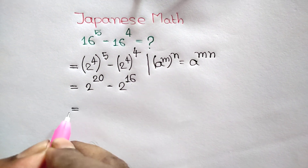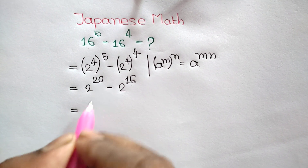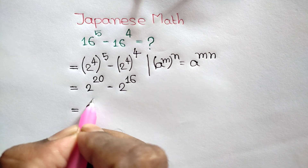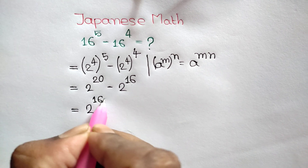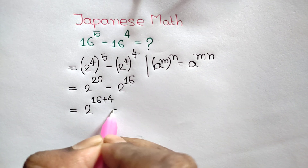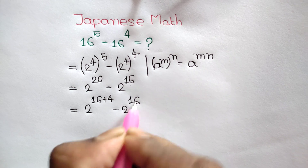Now this 2 to the power 20 can be written as 2 to the power 16 plus 4, minus 2 to the power 16.